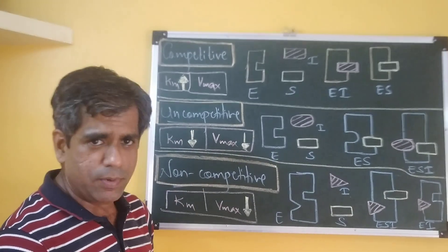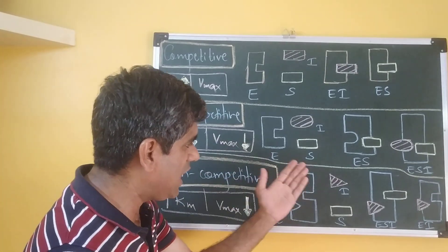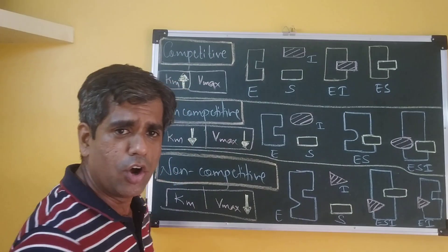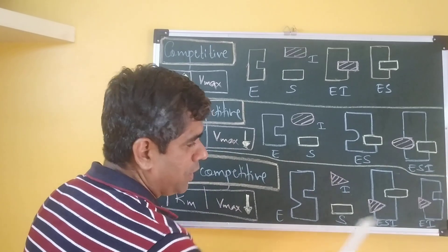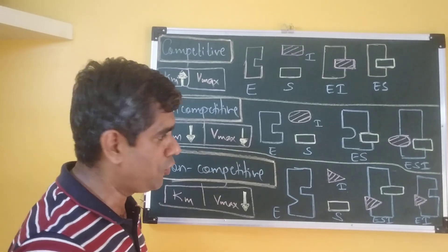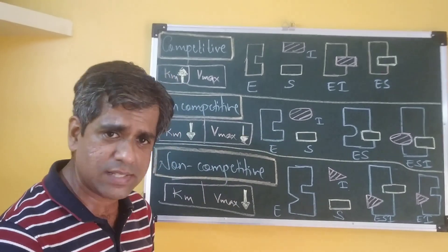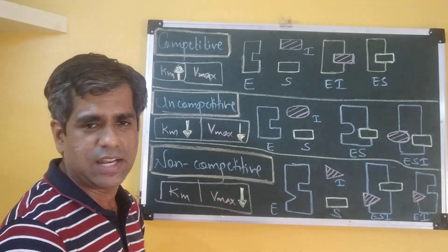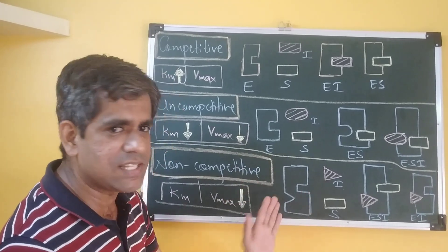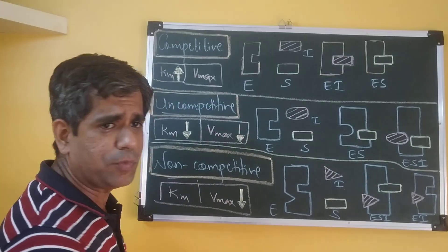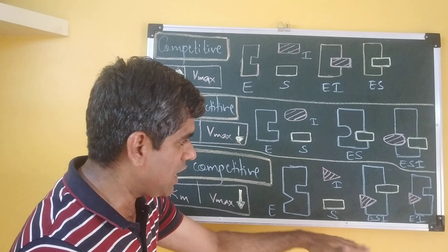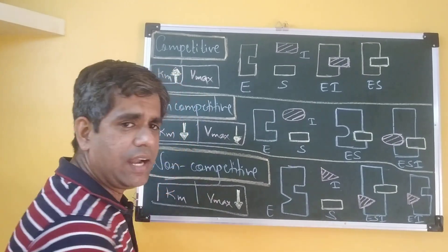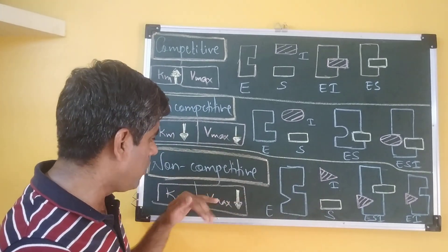For the non-competitive inhibitor, it can either bind the free enzyme or the bound enzyme, because there is a completely separate and always-revealed binding site for the inhibitor on the enzyme surface. So the enzyme can bind the inhibitor to form an EI complex, or bind the substrate to form an ES complex, and then the inhibitor can bind to form an ESI complex. Therefore, the affinity of the enzyme towards the substrate is unchanged in the presence of the inhibitor — Km remains constant. But since both EI and ESI dead-end complexes are formed, a decrease in Vmax is observed.